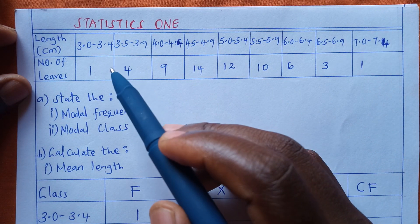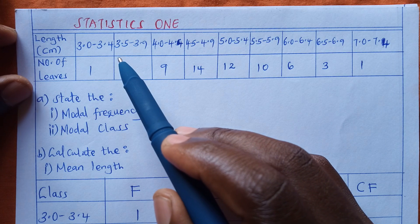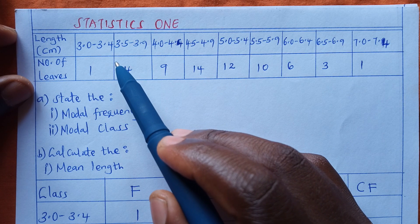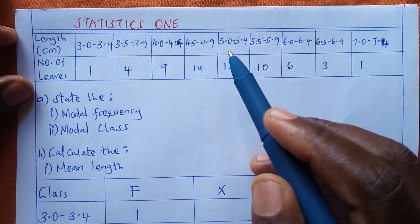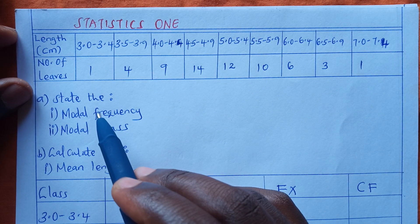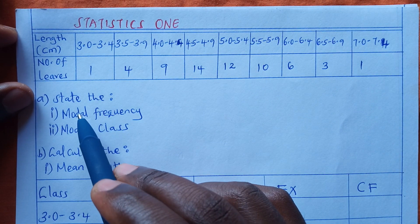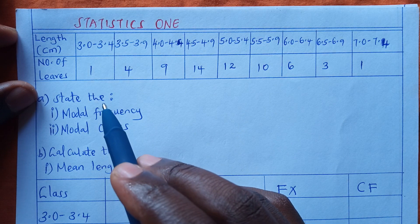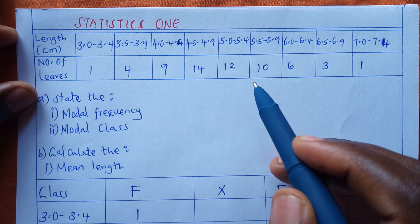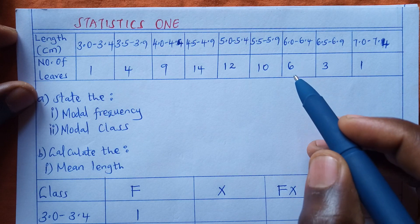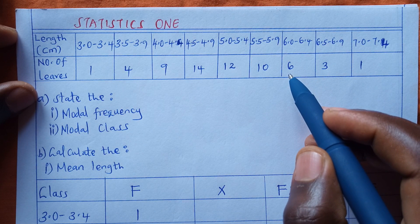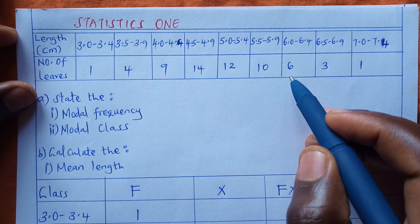We have got nine classes. The first question reads: state the modal frequency. For one to be able to state the modal frequency, you have to check the highest frequency. The modal frequency simply means the highest frequency.